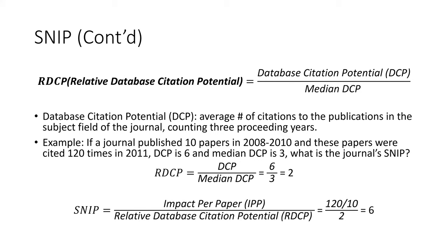If a journal published 10 papers in 2008 through 2010, and these papers were cited 120 times in 2011, and if we know the DCP is 6 and the median DCP is 3, what is the journal's SNIP? As we know, the RDCP is a ratio of DCP and median DCP, so the journal's RDCP is 6 divided by 3, which equals 2.